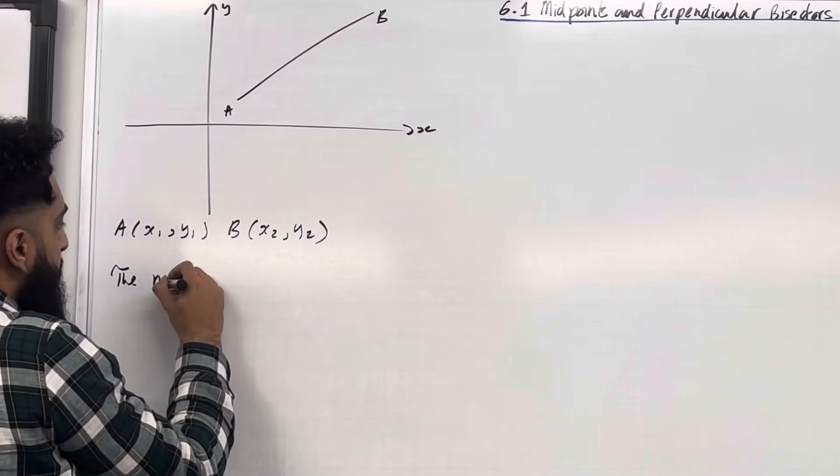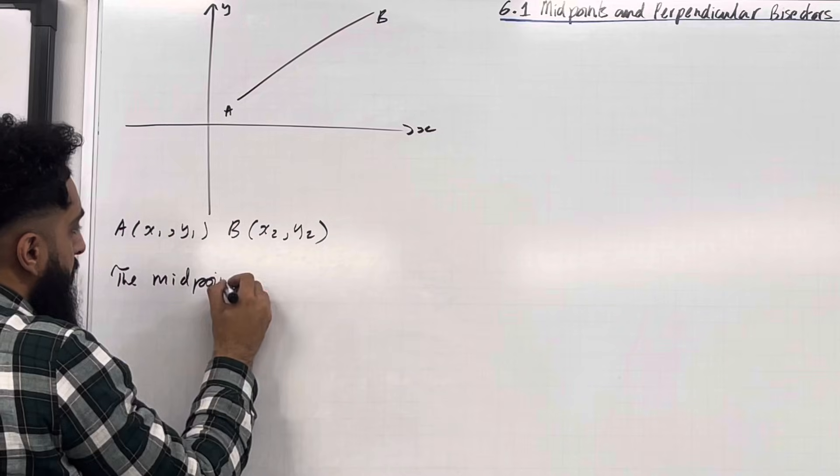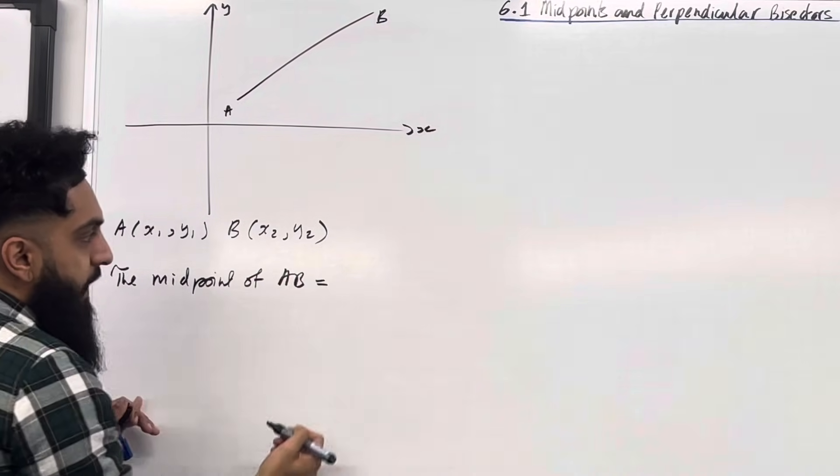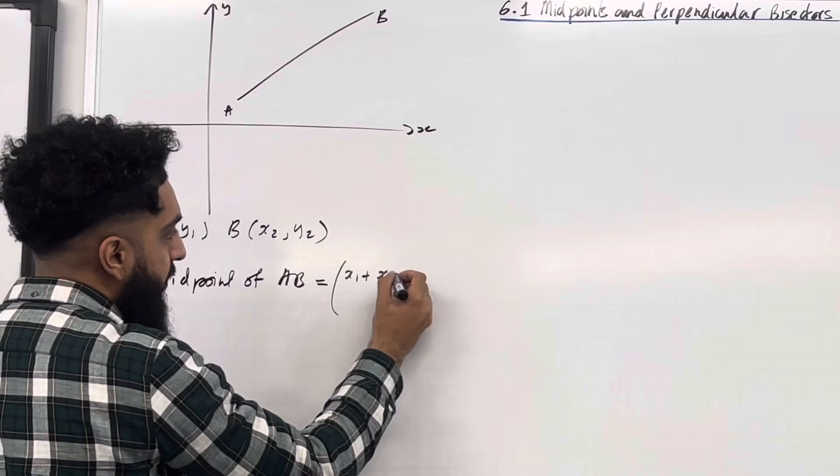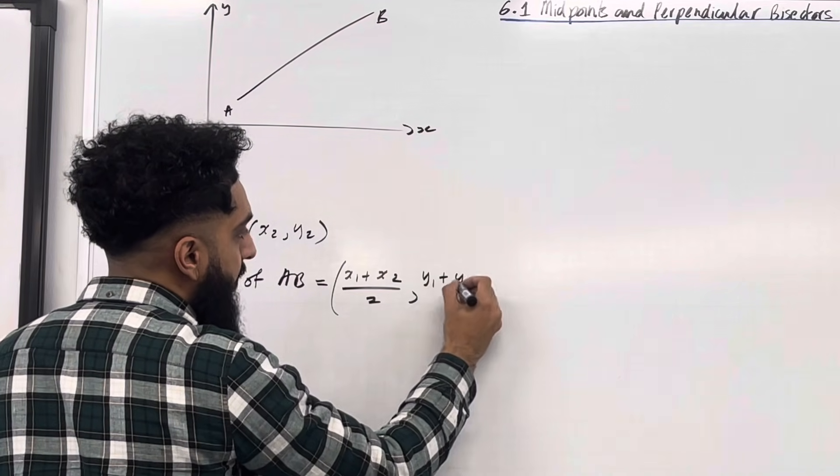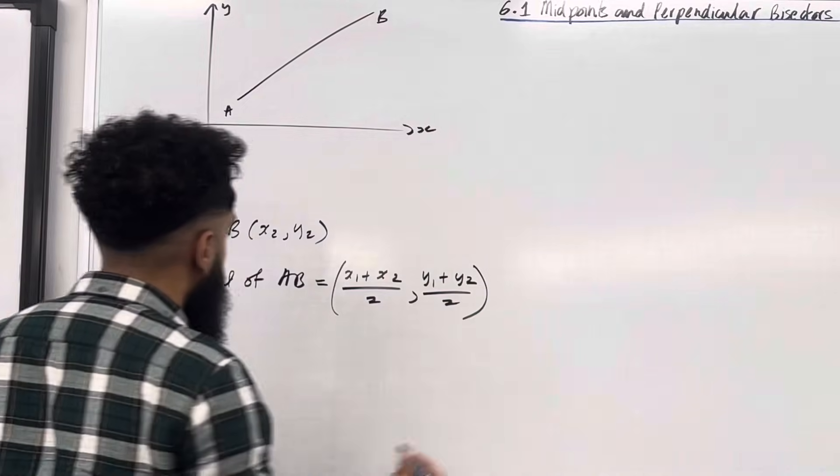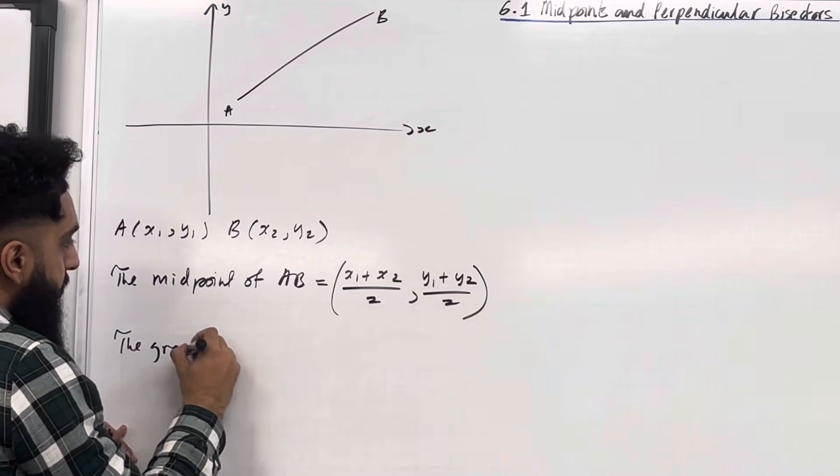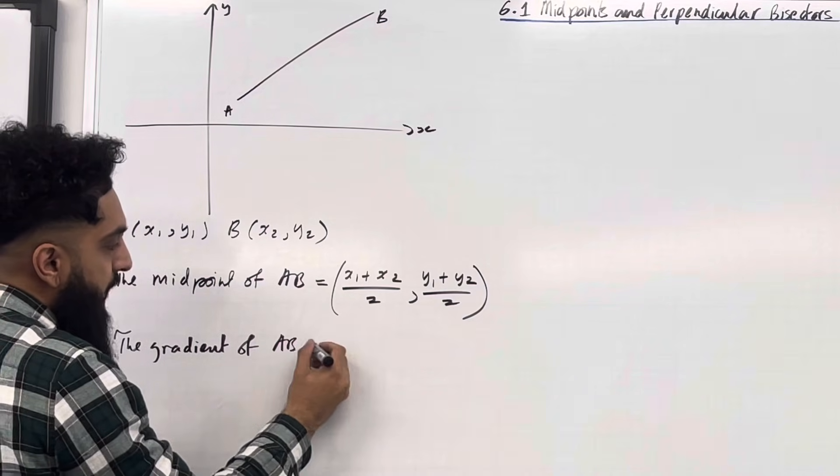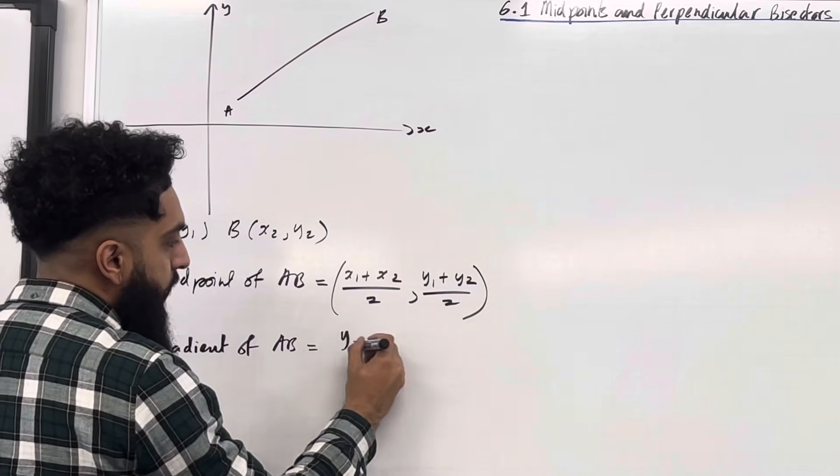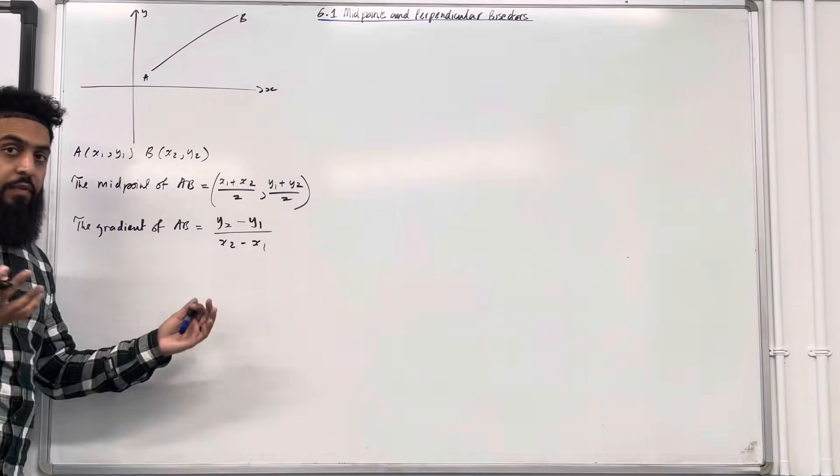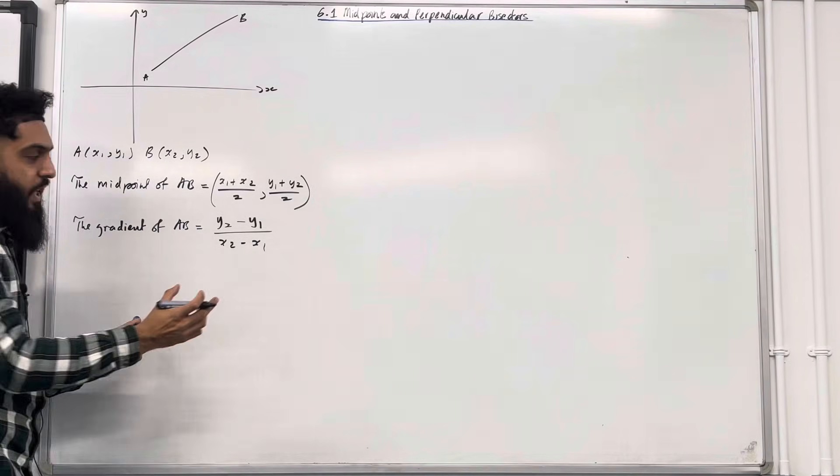The midpoint of the line segment A to B is given by x1 plus x2 all over 2, comma, y1 plus y2 all over 2. The gradient of the line segment A to B is given by y2 minus y1 all over x2 minus x1. In other words, change in y over change in x.